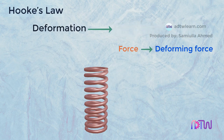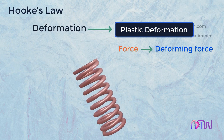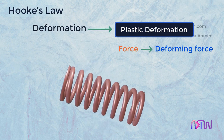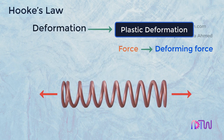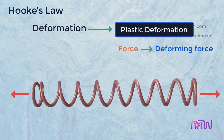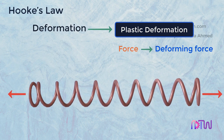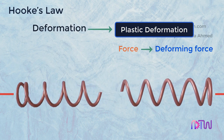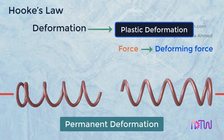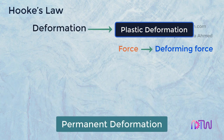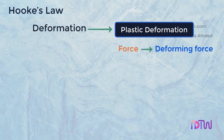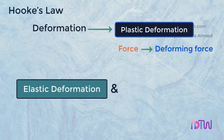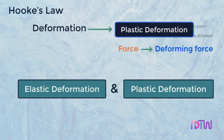On the other hand, plastic deformation is the deformation of a body that permanently changes the shape of the body. When an applied force is very high and a body cannot handle it, the body undergoes permanent deformation. Generally, all objects show both elastic and plastic deformations.